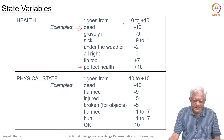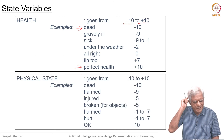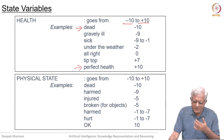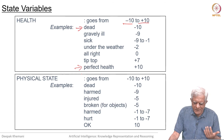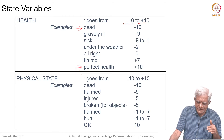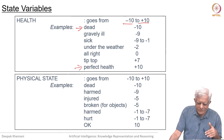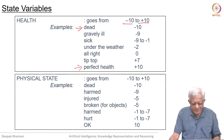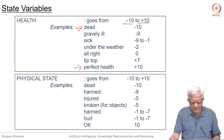Here is another example. Physical state is similar to health except that it applies to a larger class of entities which includes things like machines, and goes from minus 10 to plus 10 again. So: dead, harmed, injured, broken, armed. It seems to be dealing with mostly negative things here.